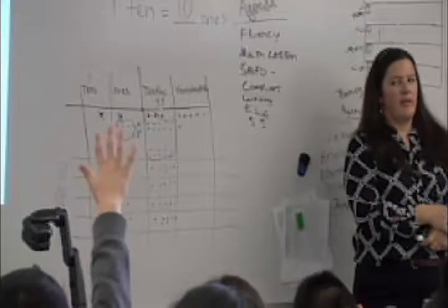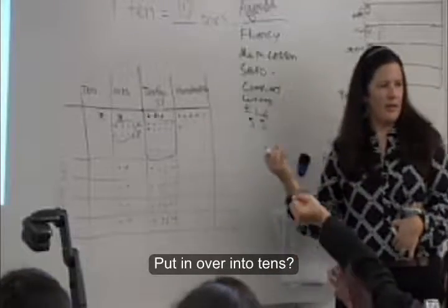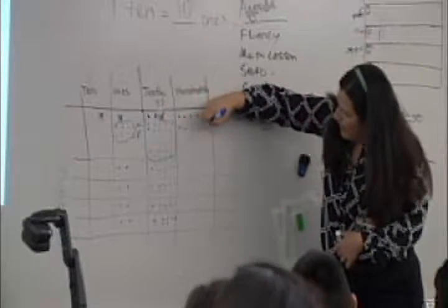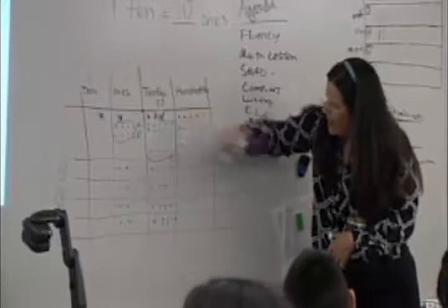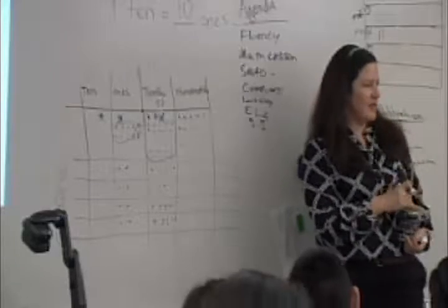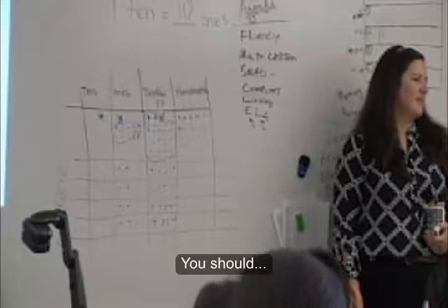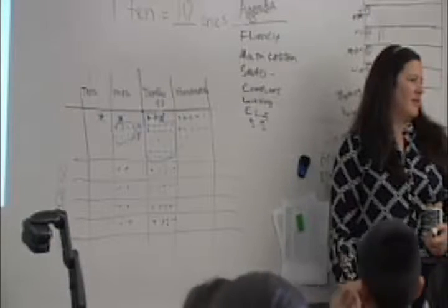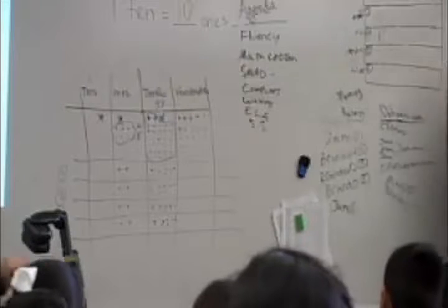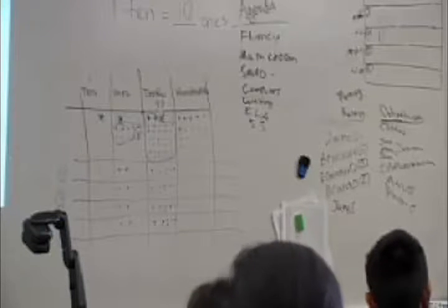Brandon suggests converting the remaining tenth into hundredths. The teacher demonstrates: 'One tenth becomes ten hundredths.' Counting together: 'One, two, three, four, five, six, seven, eight, nine, ten.' Brandon Ortiz is then asked what to do with all the hundredths. After partner talk, the teacher confirms: 'We have our four friends and there are sixteen hundredths. What am I going to do with those sixteen hundredths?'